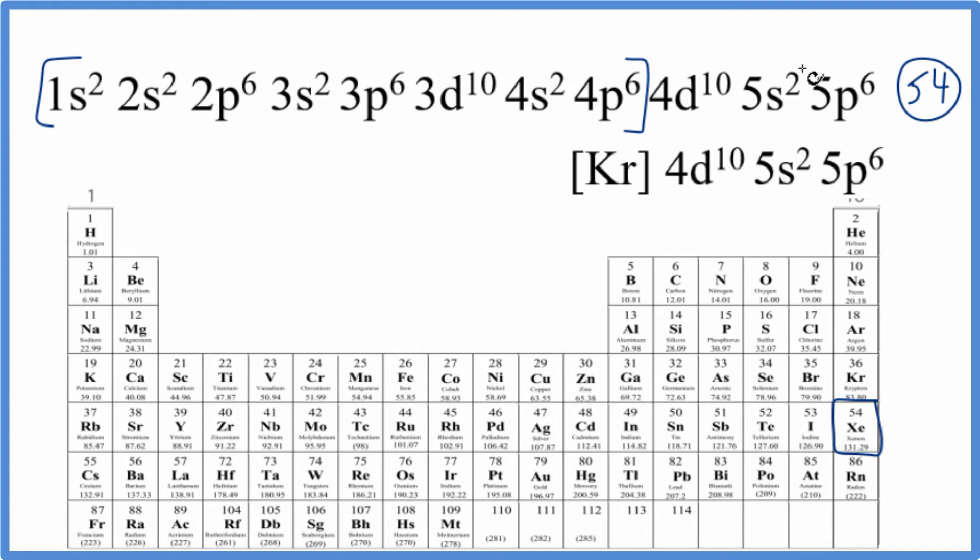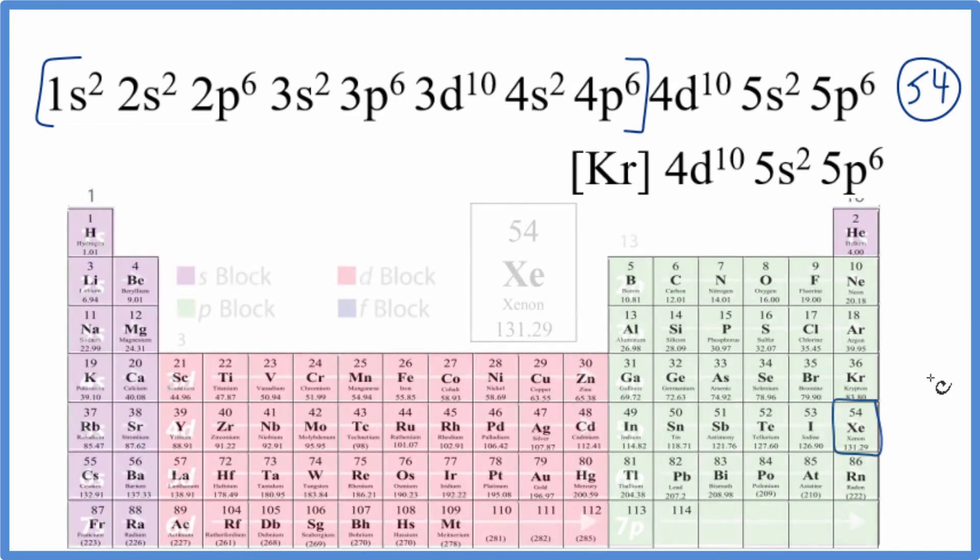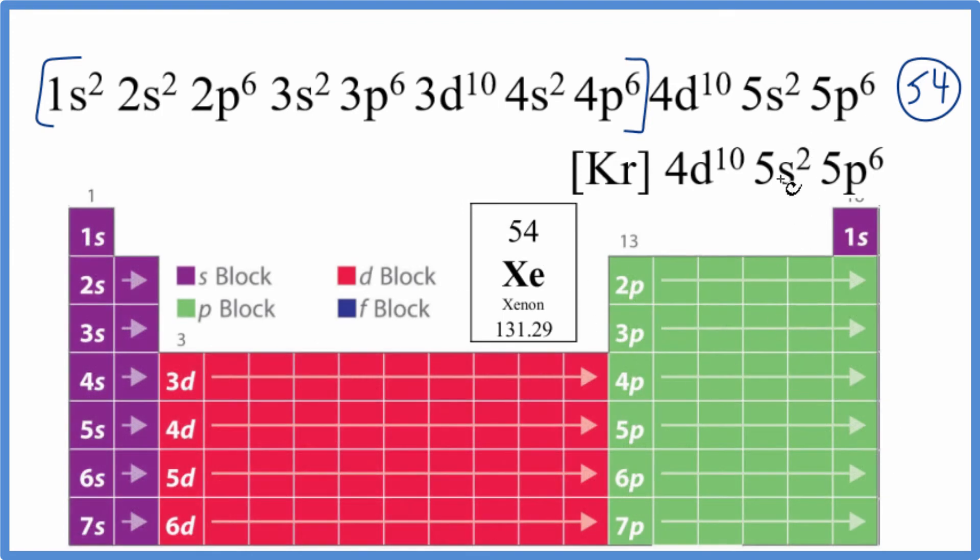Note that in both of these configurations, you'll often see the 5s² written before the 4d¹⁰. It's just something to be aware of. So once we have this, we could look at the periodic table broken up into orbital blocks as well, as a second way to figure out which element is represented by this configuration.